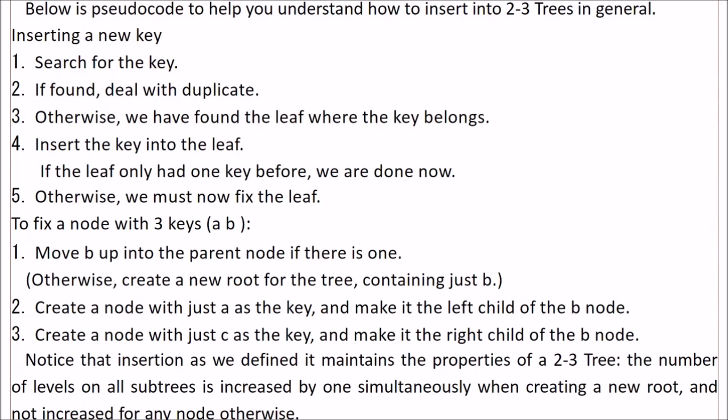This is the pseudocode to help us understand how we insert into 2-3 trees in general. For inserting a new key, we search for the key. If we find it, we deal with the duplicacy. Otherwise, we have found the leaf where the key belongs. We insert the key into the leaf, and if the leaf only had one key before, we are done now. Otherwise, we must now fix the leaf.